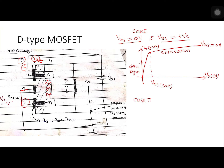Case 2: VGS is a negative value of 1 volt and VDS remains positive. Since the gate is negative, there is an electric field generated in the oxide. This field is such that it repels the electrons from the channel into the substrate.